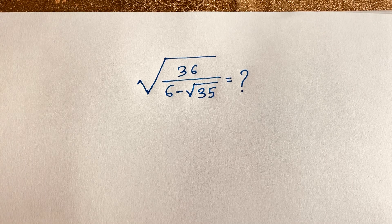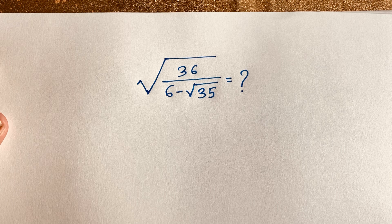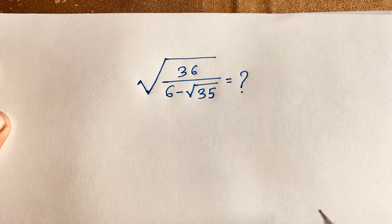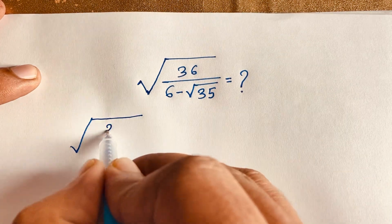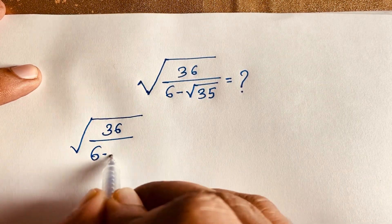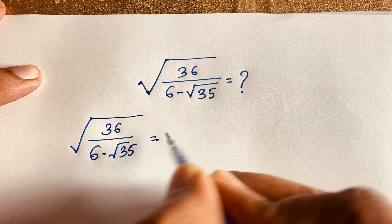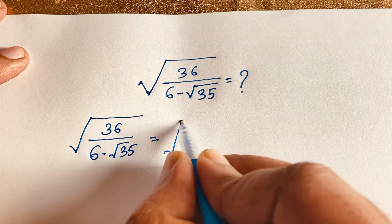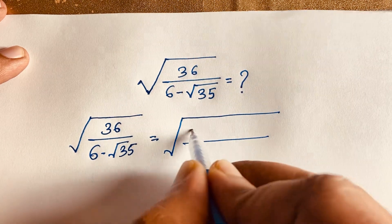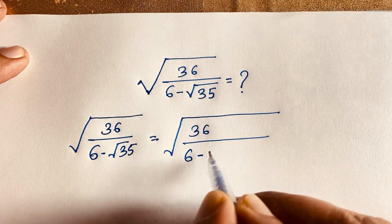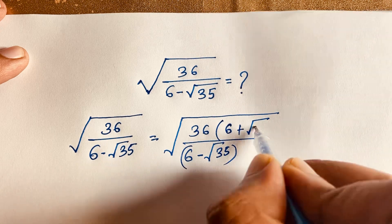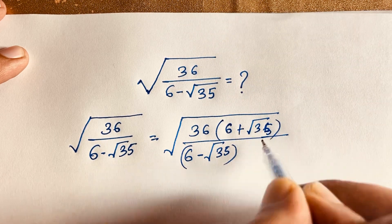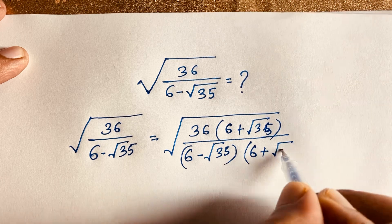Hello everyone. In this video we have solved this interesting radical math question. How to simplify square root of 36 over (6 minus square root 35). Our question is square root of 36 over (6 minus square root 35). I multiply this value by (6 plus square root 35) over (6 plus square root 35).